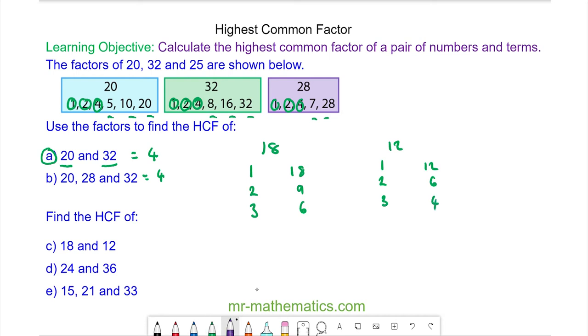So we can see 1 is common in both, as is 2, as is 3, as is 6. So because 6 is the biggest number, 6 is the highest common factor.